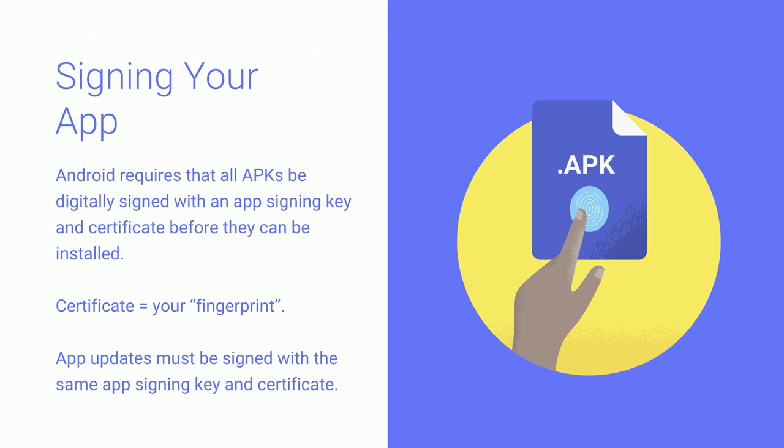Let's start by outlining the problem that we're trying to solve. Android requires that all APKs be digitally signed with an app signing key and a certificate before they can be installed. When you sign an APK, the signing tool attaches a certificate to the APK. The certificate serves as a fingerprint, which uniquely associates your APK with you and your corresponding private app signing key. This helps Android ensure that any future updates to your APK are authentic and come from the original author. You must use the same app signing key and certificate throughout the lifetime of your app in order for users to be able to install new versions.